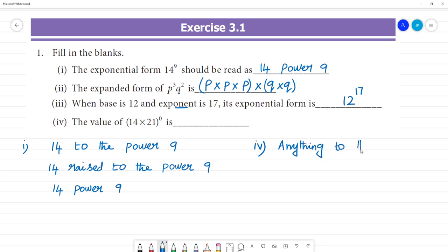Anything to the power 0 is 1. That is 100 to the power 0 is 1, 1296 to the power 0 is 1. Anything to the power 0 is 1, but except 0. Except 0.